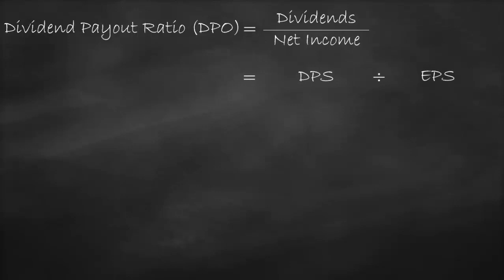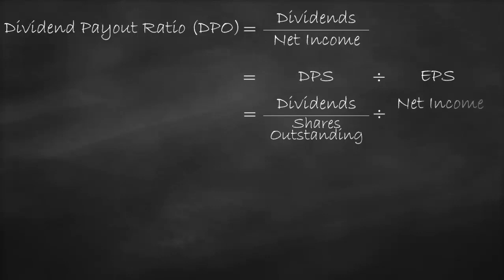The Dividend per share is Dividends divided by Shares Outstanding. The Earnings per share ratio is Net Income divided by Shares Outstanding.